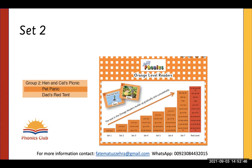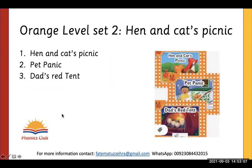There are seven sets in the Orange Level, and each set has three titles. In Group 1 we have certain sounds, and in Group 2, Set 2, we have the sounds of Group 1 and Group 2. The first reader is 'Hen and Cat's Picnic.'